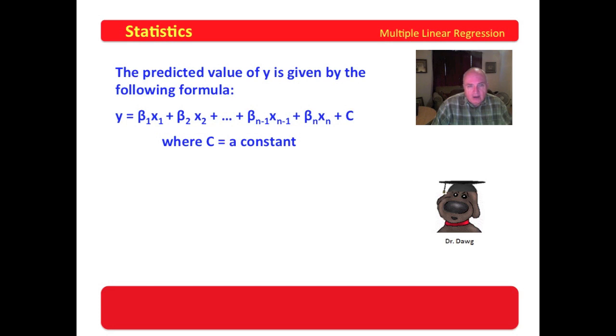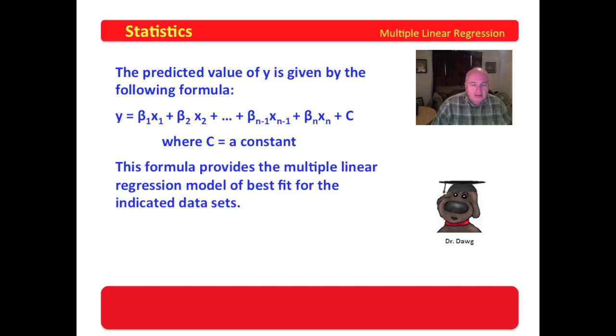And of course, once we find all the beta values and multiply them by the independent variable values at that point and add a constant, we have a predicted value of y.